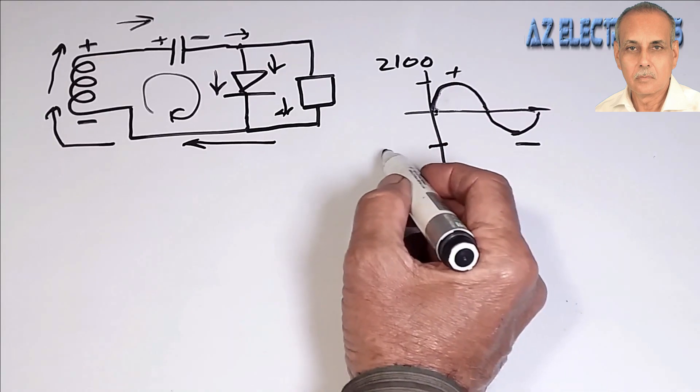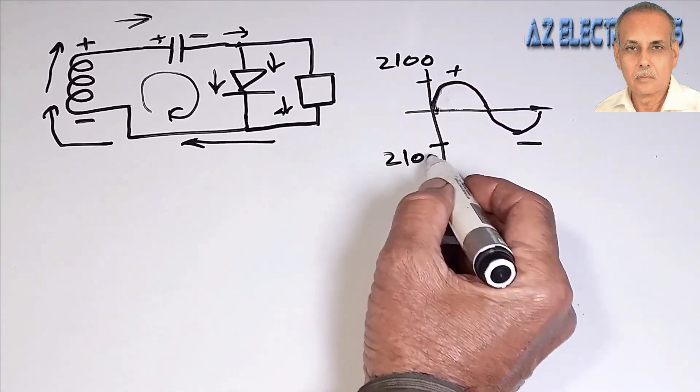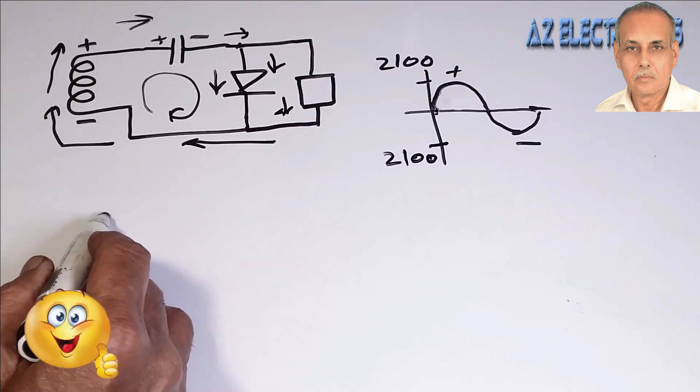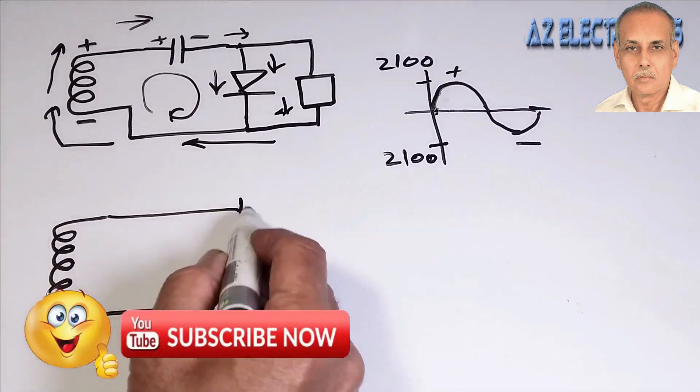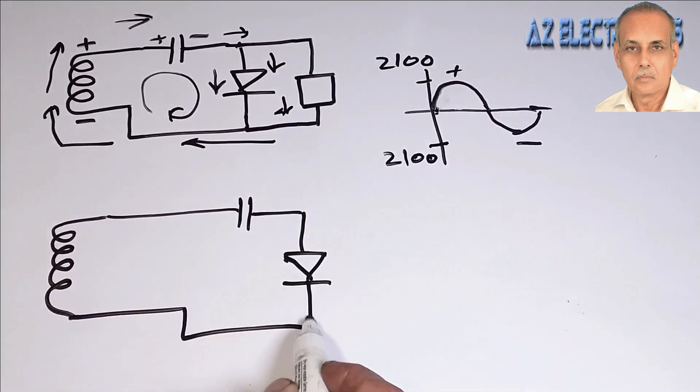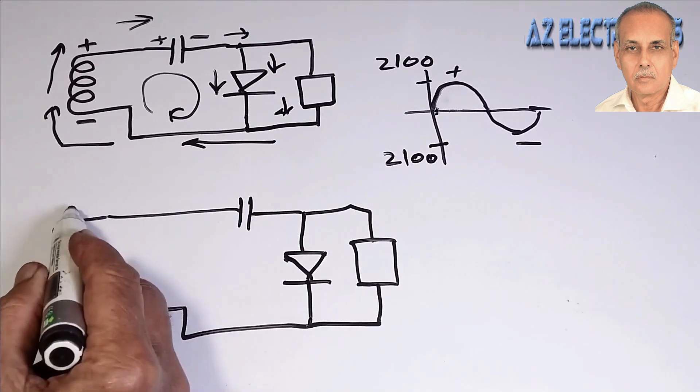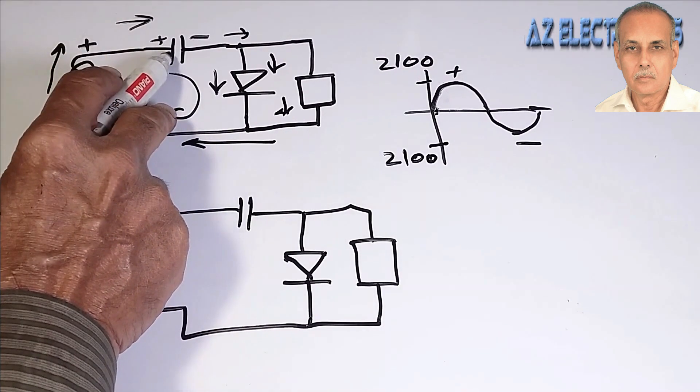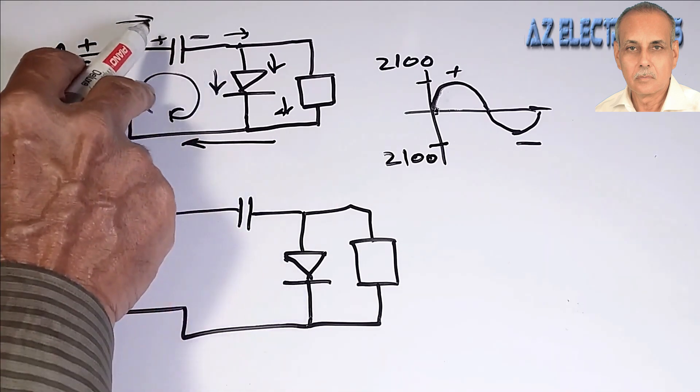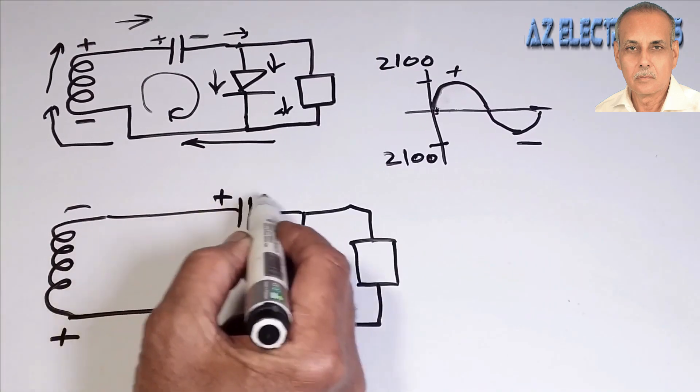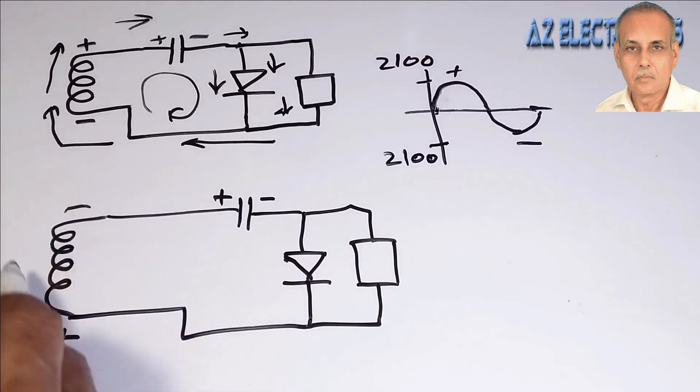Now the second half cycle which is negative, and its peak is also 2100 volts but in negative. When the negative half cycle occurs, the lower end of the coil which was negative before has now become positive and the upper end has become negative. The direction of current flow is changed. The capacitor is charged and has 2100 volts in it. 2100 volts are also present in the coil. The voltages of the coil and capacitor are adding in series according to polarity and 2100 plus 2100 is now 4400 voltage.